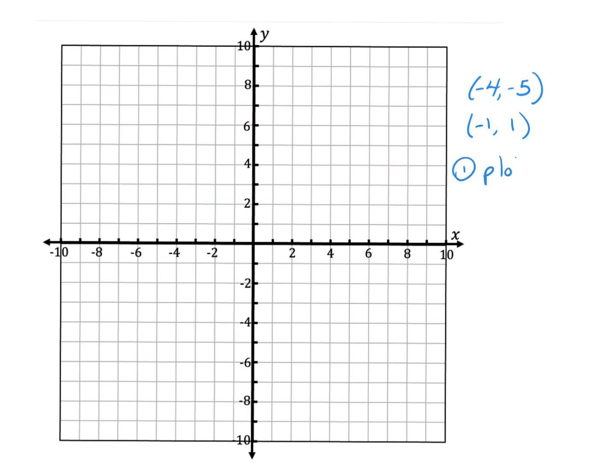So first thing we're going to do, we're going to plot our points. So -4, -5 is 4 to the left and 5 down, which puts me here. And then -1, so 1 to the left, but y is positive, so that puts me here. So now we don't know how far up this goes, but it definitely goes down this way. So now that I've plotted my points, I need to find my slope by counting my rise over run. And to do that, I need to draw my right triangle.